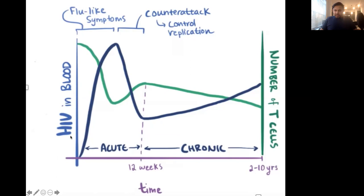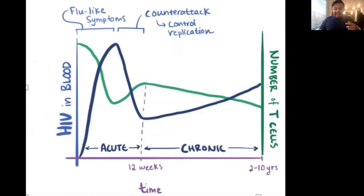On the navy blue line, you see HIV in the blood. The green line is the number of T cells. You have a great immune system initially, and once HIV comes in, the T cells shut down. After a few weeks, T cells recognize HIV and fight back, causing a low HIV viral load in the blood. However, eventually HIV overtakes the T cells, and that's when you progress through HIV to AIDS.